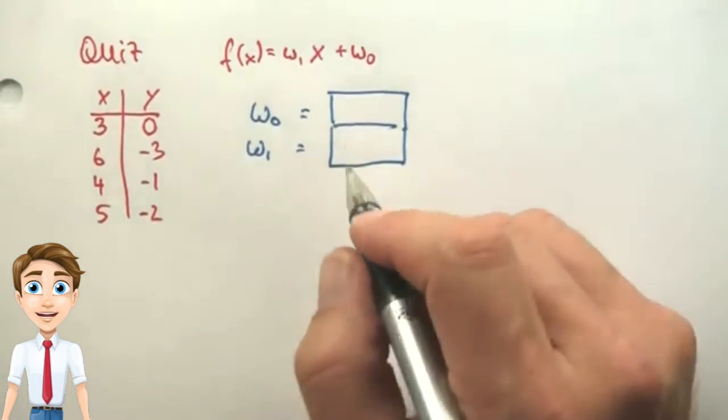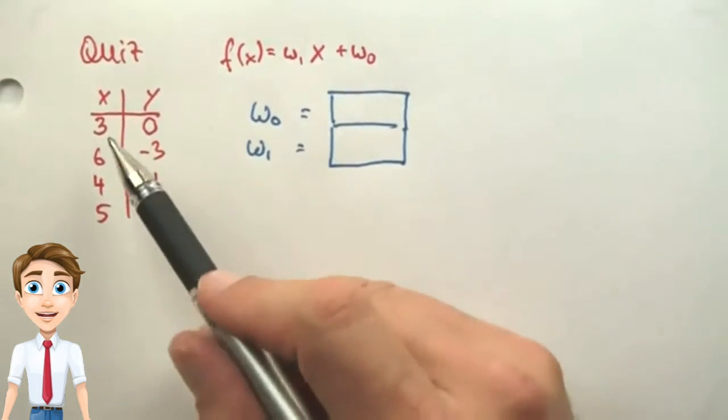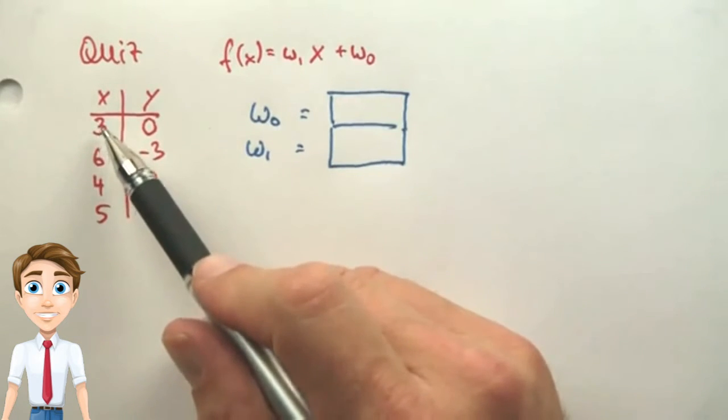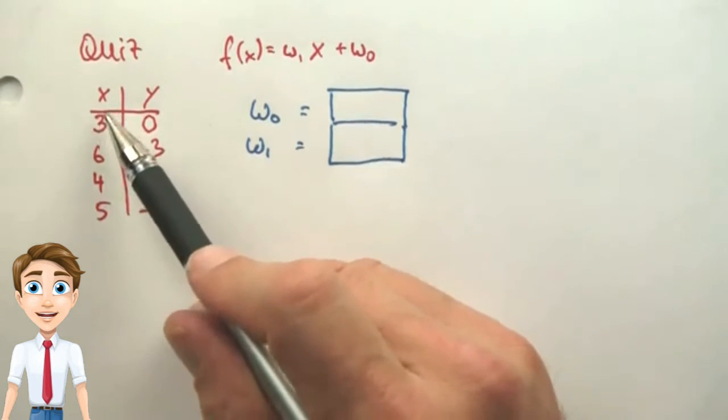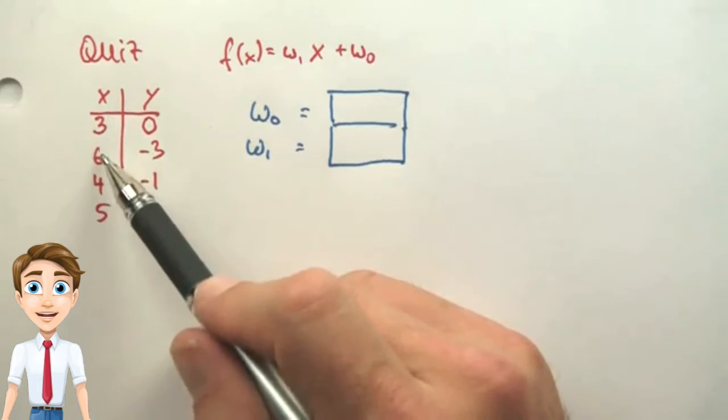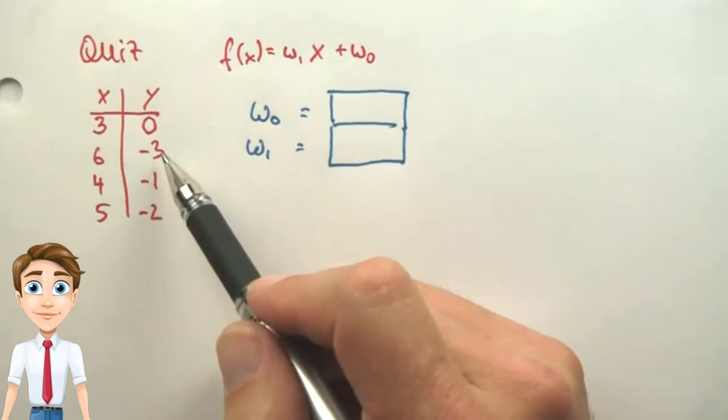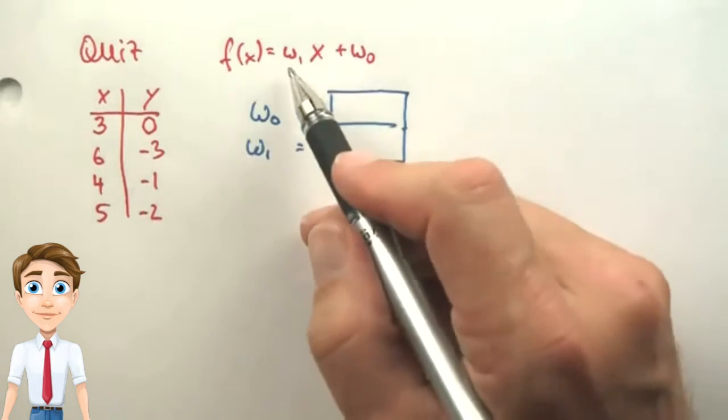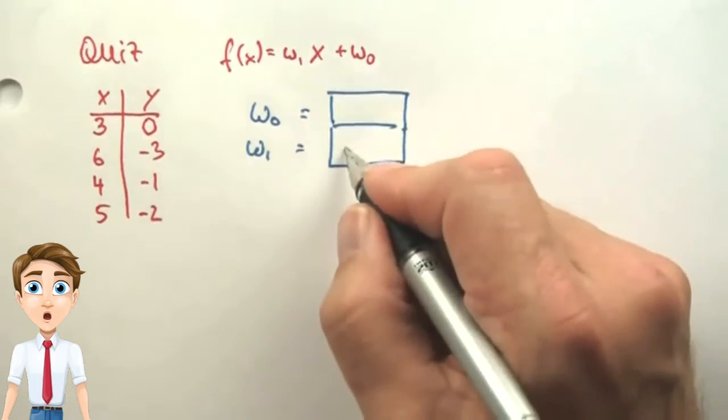This is a surprisingly challenging question. If we look at these numbers from 3 to 6, when we increase x by 3, y decreases by 3, which suggests w1 is minus 1.